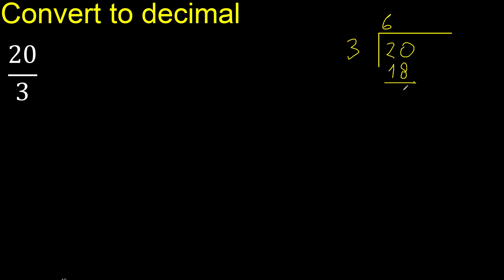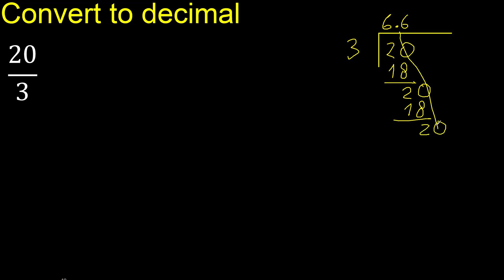20 minus 18 is 2. There is no next digit, so we complete with 0 — here, with a decimal point. 20 again. 3 multiplied by 6 is 18. 20 minus 18 is 2. We always complete with 0 — decimal point goes here.